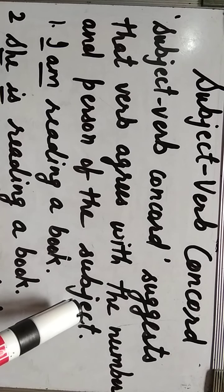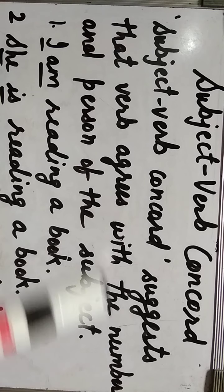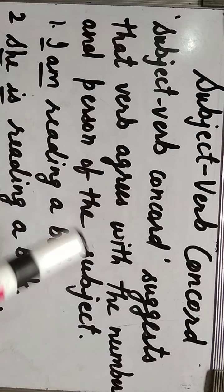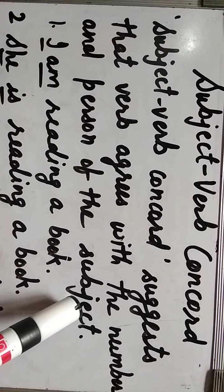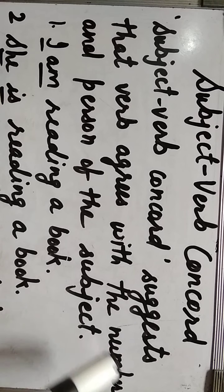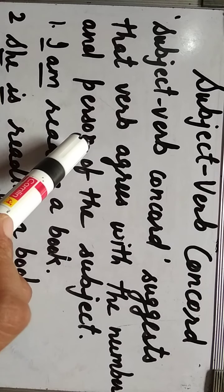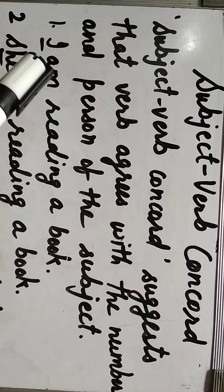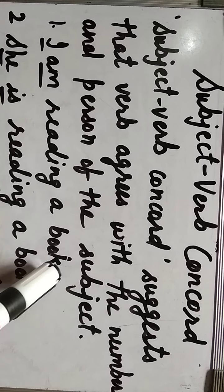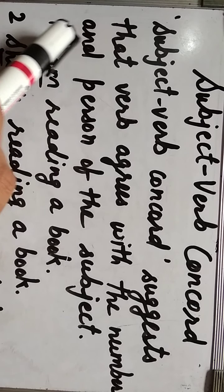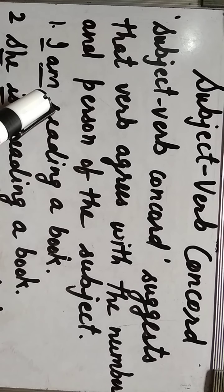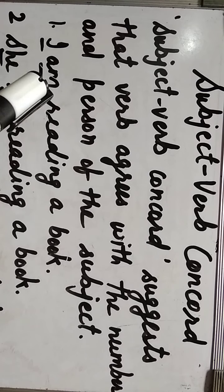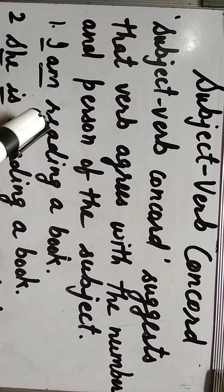The verb should agree with the subject according to its number and person. For example, 'I am reading a book.' Here, first person 'I' is used with 'am' — the verb agrees with the subject.